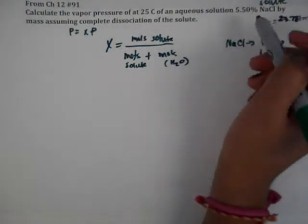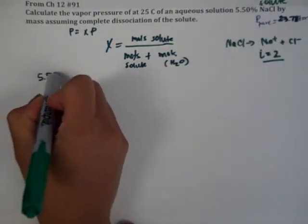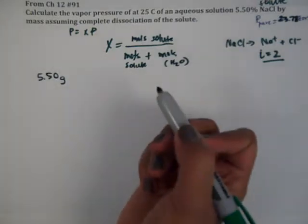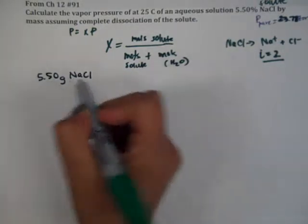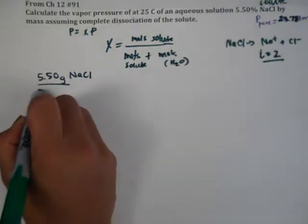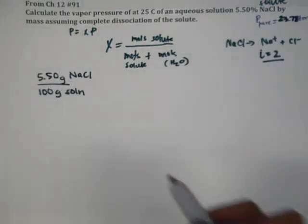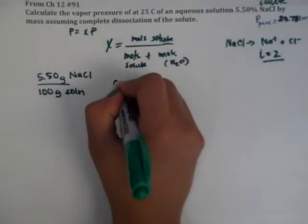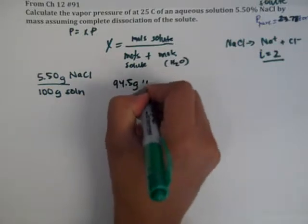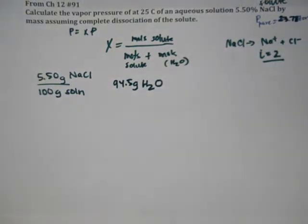So, in a 5.5% solution, we have, again, we're going to assume 5.5 grams of solute, which is NaCl, which is in 100 grams of solution. So, if 5.5 grams are NaCl, then the other percentage has to be the water, the solvent. And so, when we do the math, that's 94.5 grams of water. So, 5.5 grams of solute, 94.5 grams of water.